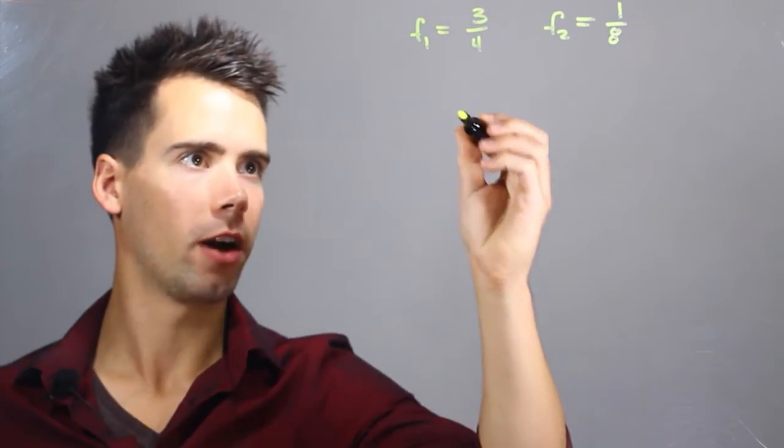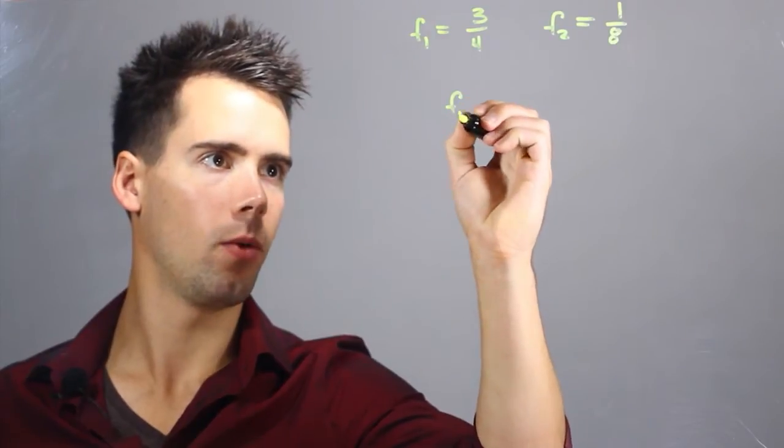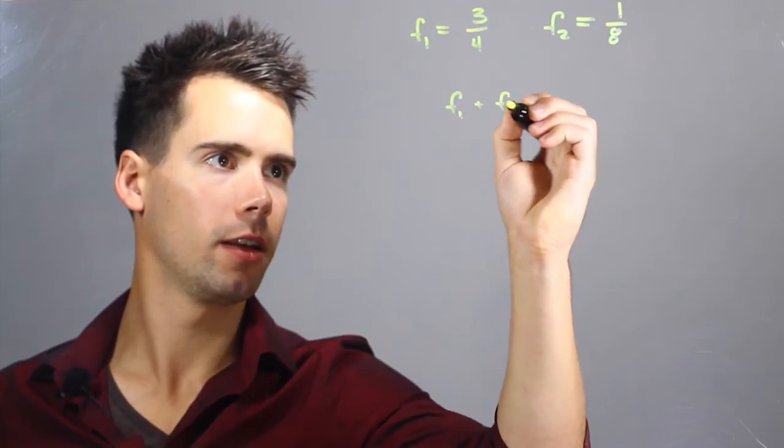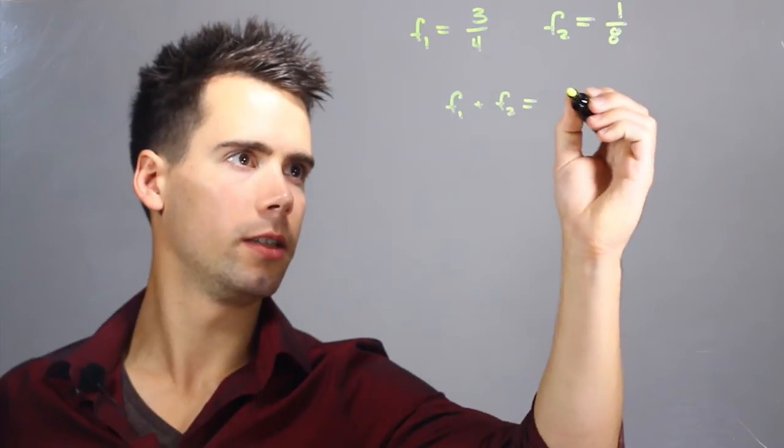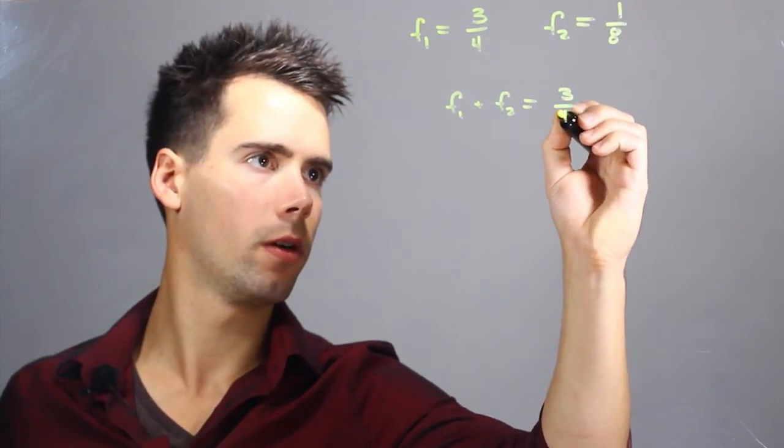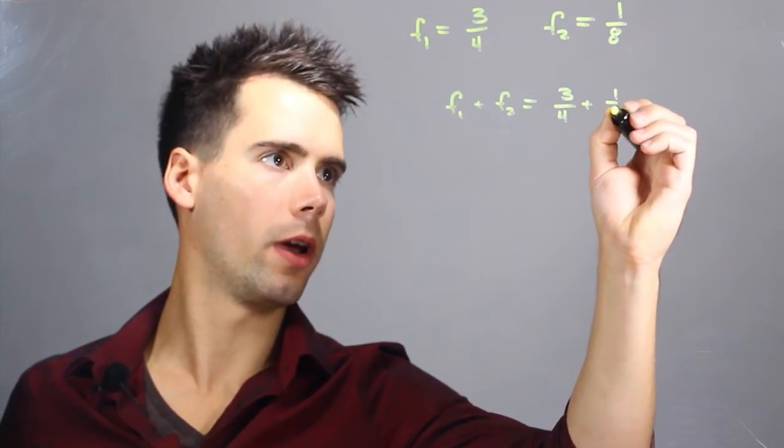So now we simply have to add these two fractions and we find that F1 plus F2 is equal to 3 over 4 plus 1 over 8.